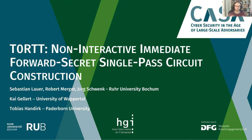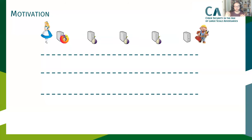Before I present our results, I would like to start with a short motivation and brief introduction to Tor. Providing the ability to browse the web anonymously has become a challenging task in the age of large-scale adversaries. One way to protect yourself against infinite surveillance is to use the Onion Routing Network, or short Tor.